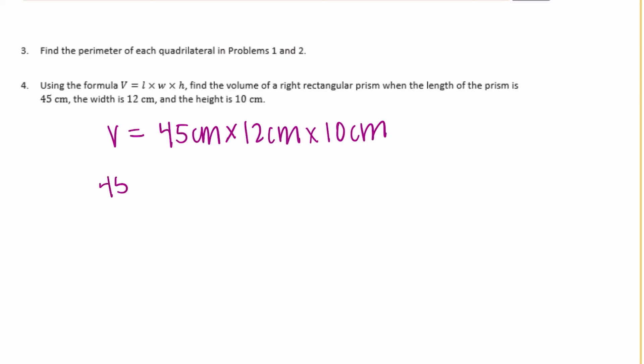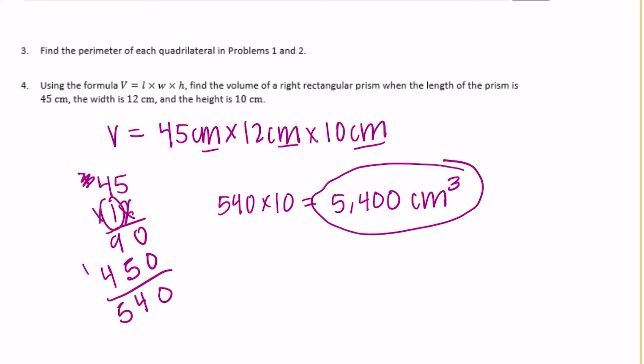Let's do forty-five times twelve, because once I get that, I can easily multiply it by ten. Five times two is ten, carry the one. Four times two is eight, plus one is nine. Put the zero down. One times five is five, one times four is four. Add it together, we get five hundred forty. Five hundred forty times ten would be equal to five thousand four hundred, and we have centimeters times three of them, so centimeters cubed, because we're talking about volume.